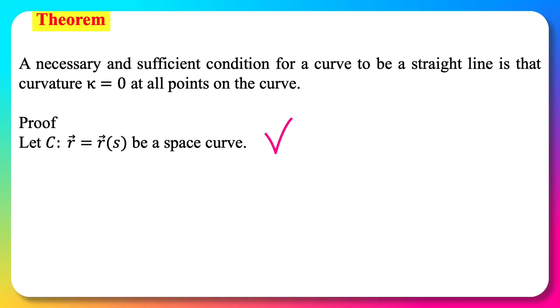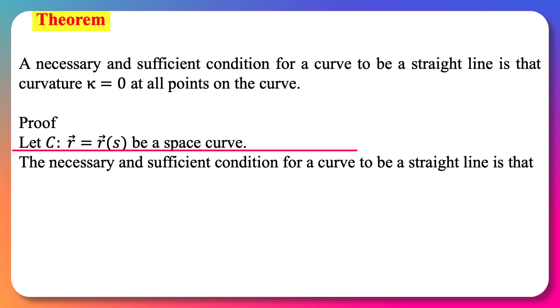To prove this theorem, let us suppose that C be a space curve. The necessary and sufficient condition for a curve to be a straight line is that its position vector should be expressed in a linear form.